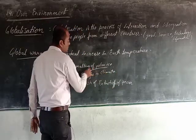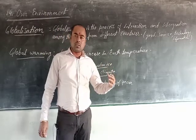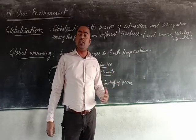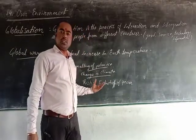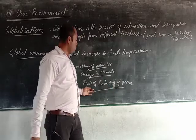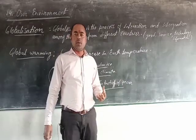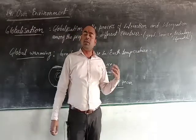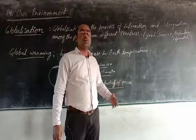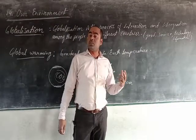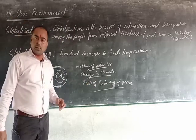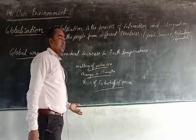Global warming is affecting our environment in terms of melting of polar ice and change in climate. When CO2 is increased in the atmosphere, it increases the temperature, changing the climate. Next is the risk of extinction of species - the species which are in danger, left in very less numbers on earth, will be extincted if global warming continues, because many endangered species are living in the polar region, and if the polar region melts, they will not have any habitat to live in.